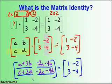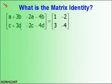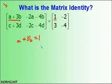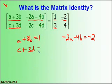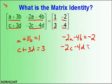We have a 2 by 2 matrix equal to a 2 by 2 matrix. Because of matrix equality, we can relate these two matrices. Row 1, column 1 has to equal row 1, column 1, so A plus 3B equals 1. Row 1, column 2 has to equal row 1, column 2, so negative 2A minus 4B equals negative 2. Row 2, column 1 gives us C plus 3D equals 3. And row 2, column 2 gives us negative 2C minus 4D equals negative 4.